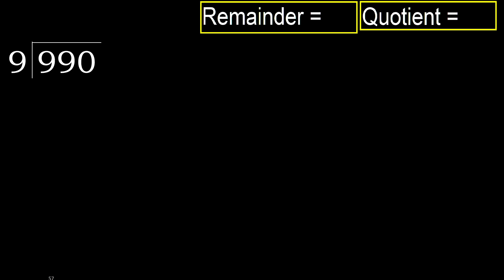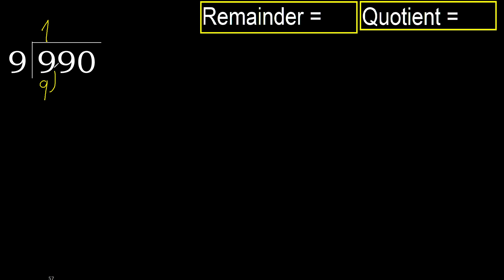990 divided by 9. 9 is not less, therefore 9 multiplied by which number is nearest to 9, but not greater? 9 multiplied by 2 is 18, which is greater. Multiply by 1 is 9, which is not greater — ok. Subtract: 9 minus 9 is 0.